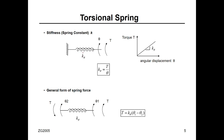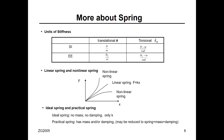For a torsional spring, the relationship is between applied torque and angular displacement, so the torsional stiffness equals torque divided by angular displacement. If both ends are moving with angles theta1 and theta2, the torque equals K times (theta1 minus theta2). The SI unit for stiffness is N/m, and for torsional stiffness it is N·m/rad.